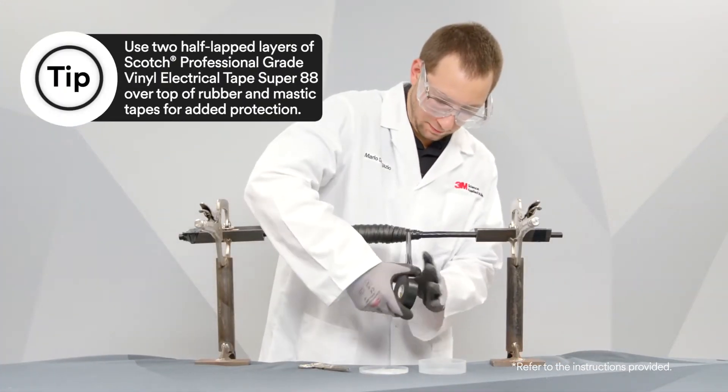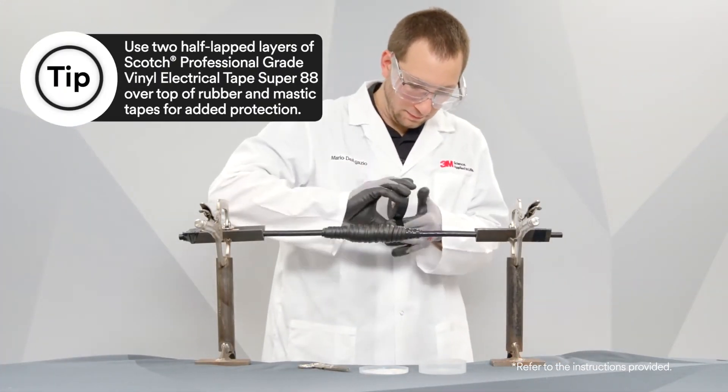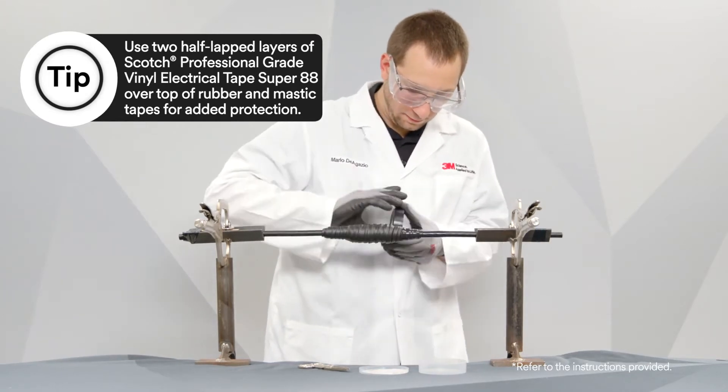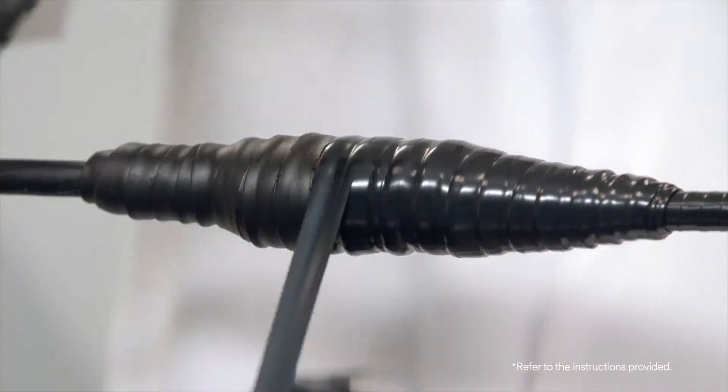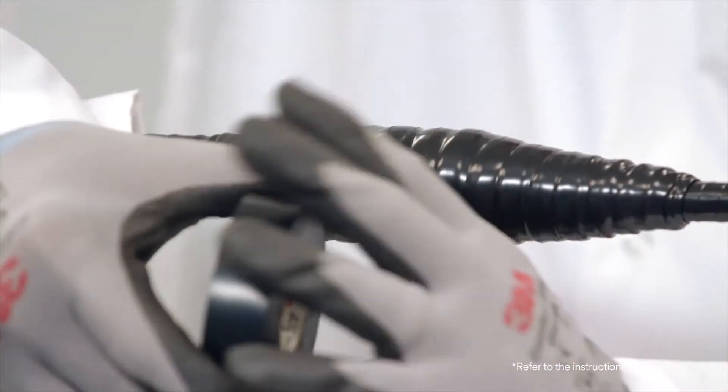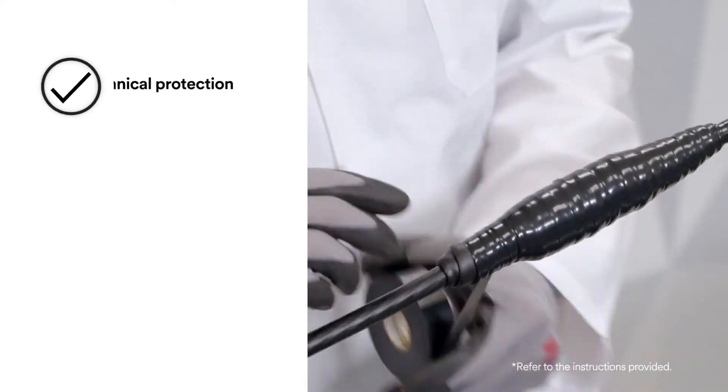One example is to use a minimum of two highly stretched, half-lapped layers of Scotch Professional Grade Electrical Tape Super 88 over top of mastic or rubber tapes to help provide extra mechanical protection, UV resistance, and to help create a better seal.